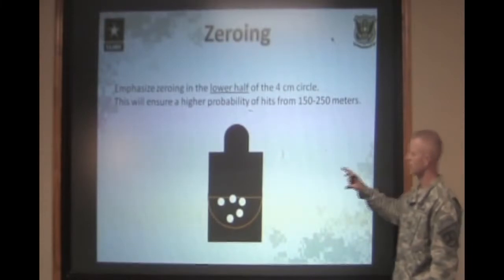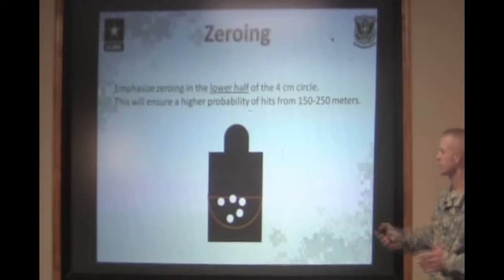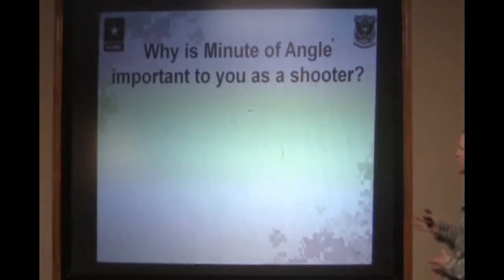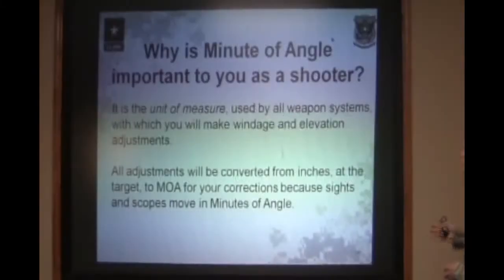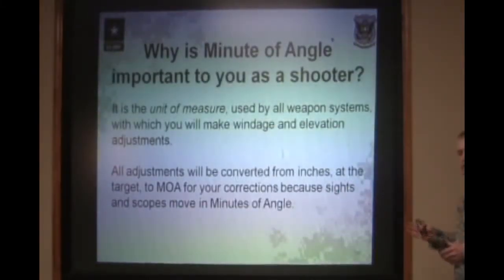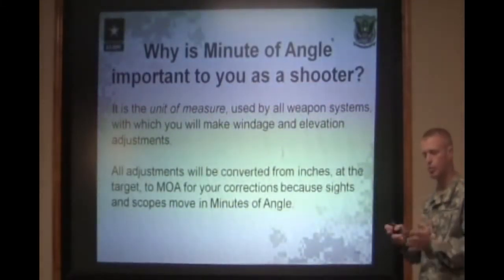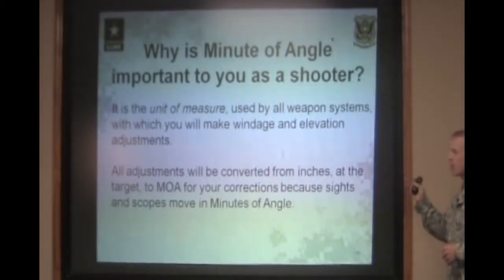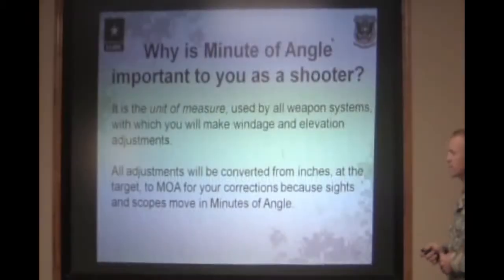Now we know how to zero the rifle at 25 meters and where we should be zeroing it to achieve hits from zero all the way up to 300 meters. We're going to talk about a term used when manipulating sights called minute of angle, and why it's important to the shooter. Minute of angle is nothing more than a unit of measure used by all weapon systems which make our windage and elevation adjustments. As you adjust those sights, each click is worth a certain portion of a minute of angle. All adjustments will be converted from inches on the target to minutes of angle on the sights.